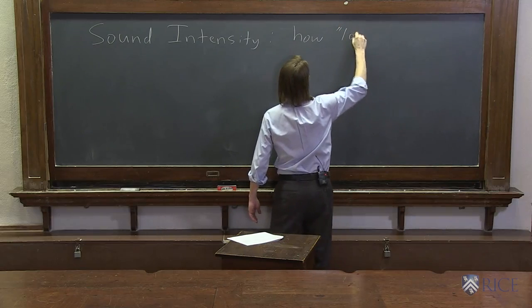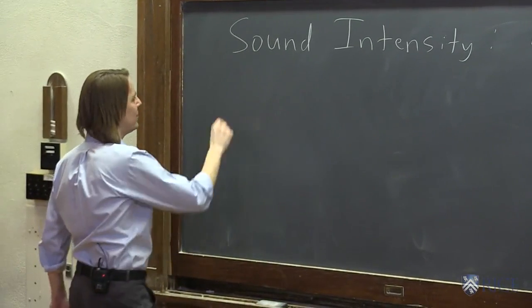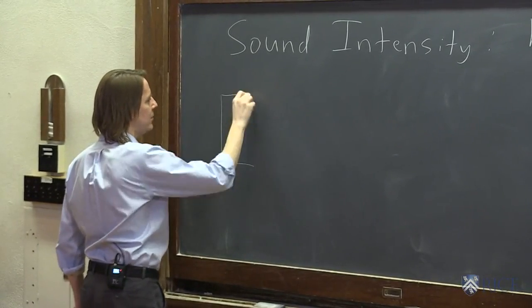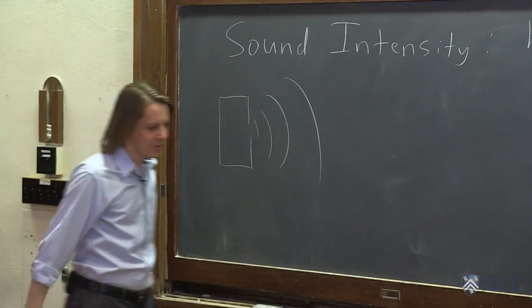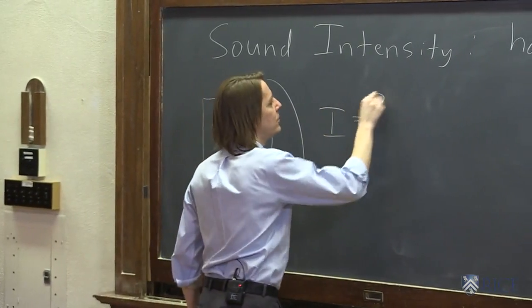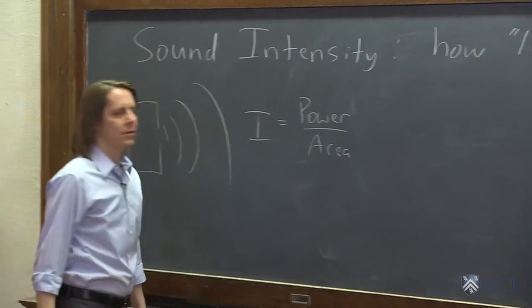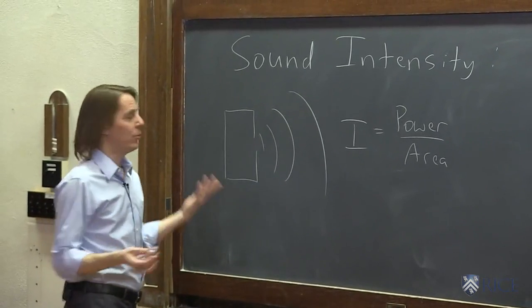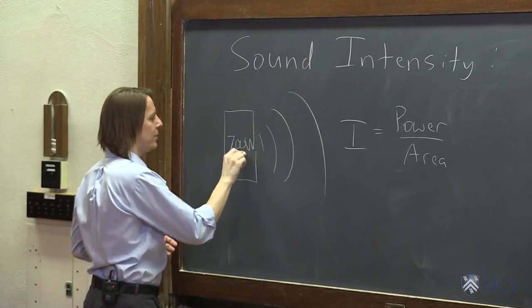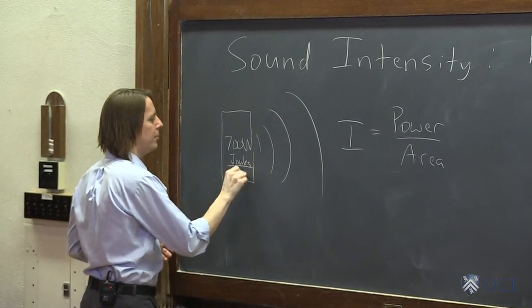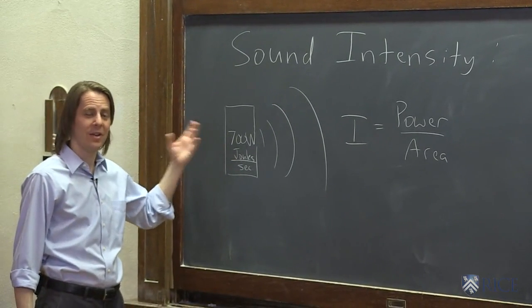It's how loud the sound is proportional to the amplitude of the wave. So let's say you've got a speaker here like this, and there's some sound coming out of it. I'll draw like that, just blasting out the intensity I. It's really just the power in the wave per unit area. So the speaker may give you a certain power. Say it's a 700-watt speaker. That's in joules per second. You know what that is. Energy per time. A joule per second is a watt.